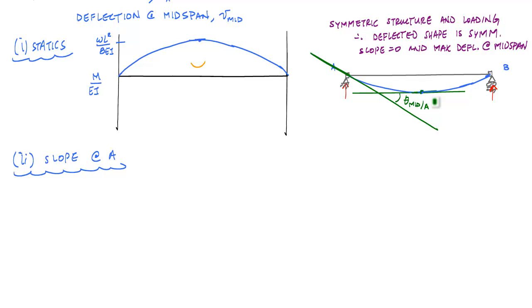So now I can apply my first moment area theorem, which is equal to the integral from 0 to mid-span here, which is L over 2. So this point is 0, this point is L over 2 on my x-axis. So I'm going from 0 to L over 2 of the area of the curvature diagram, dx.